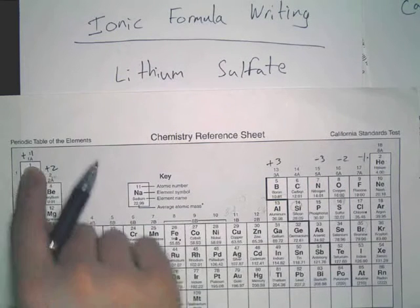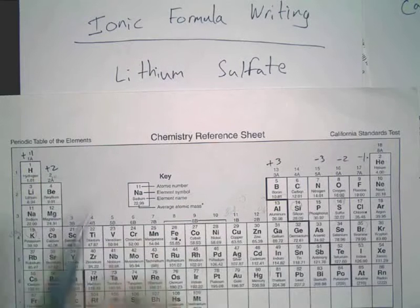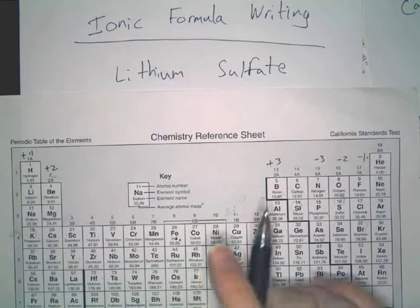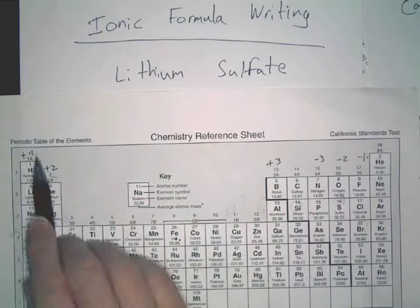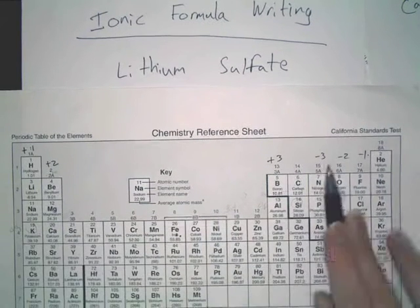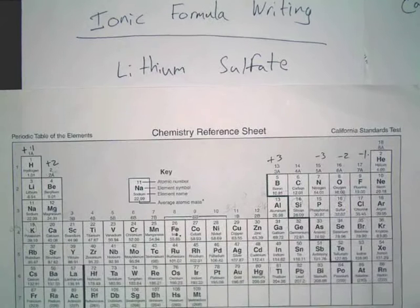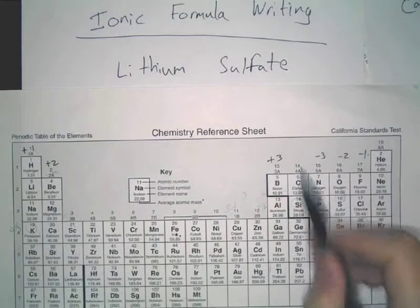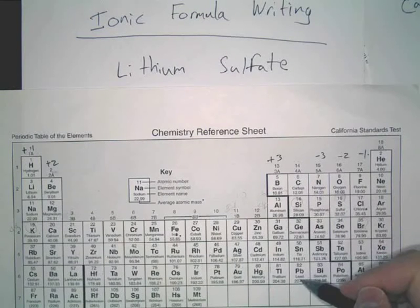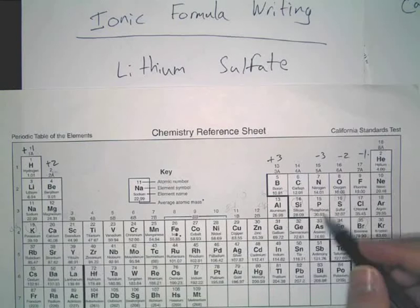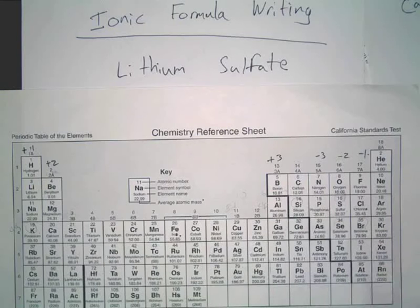If you haven't written this on your table, write this down. I told you to write this down on Friday. So remember, plus 1, plus 2, plus 3, negative 3, negative 2, negative 1. The stuff in the middle, that depends. We're going to talk about that in like 5 minutes. Tin and lead form differing ionic charges, and carbon and silicon don't really form any ionic charges.